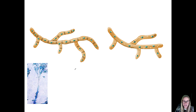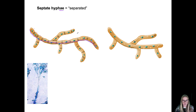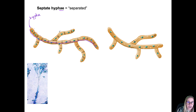So first of all, septate hyphae. Remember, a hypha (singular) or hyphae (plural) is just a bunch of fungal cells that are connected end on end, stretching out to make one long fiber-like structure. They can branch out or just be one long thing.